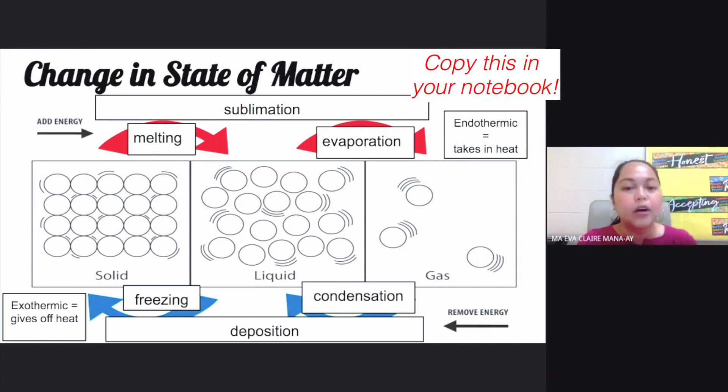Now, if you will be asked, what is one entity or what is something that we need to change the state of matter? What will be your answer? It should be heat or energy. Heat, energy, or temperature. So you take away the heat from your matter, it will change its phase or its state. You put in more heat, then it's going to change its state or its phase.